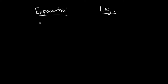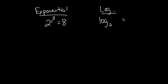Let's say I have 2 to the third is equal to 8. This is an exponential equation, and this is true — 2 to the third power is 8. If I want to create the logarithmic form of this, I'll say log of base... the base of the log is the same as the base of the exponential, which is 2. A logarithm is always equal to an exponent, so the exponent 3 goes to the right of the equation. And 8 goes here. So we say log base 2 of 8 is equal to 3. If I go back into exponential form, it goes back to the same thing.